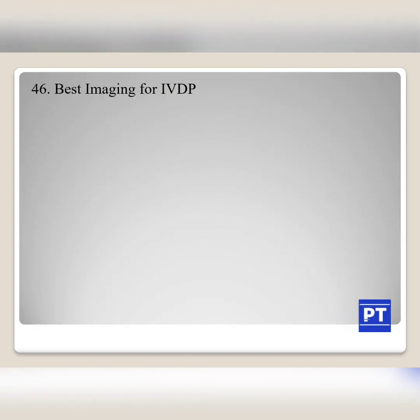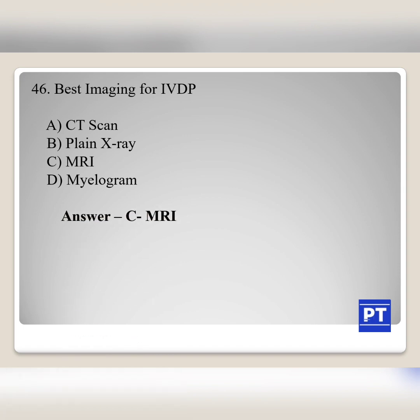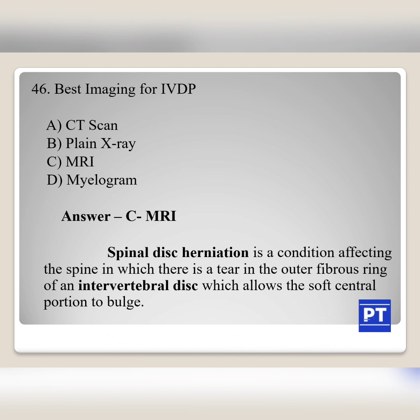Question No. 46: Best imaging for IVDP — IVDP means intervertebral disc prolapse. Option A CT scan, Option B plain X-ray, Option C MRI, Option D myelogram. The answer is Option C, MRI. Spinal disc herniation is a condition affecting the spine in which there is a tear in the outer fibrous ring of an intervertebral disc, allowing the soft central portion to bulge. IVDP is a condition where the disc bulges outside and compresses the sciatic nerves, resulting in pain to the lower limb.